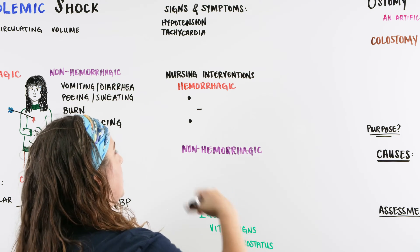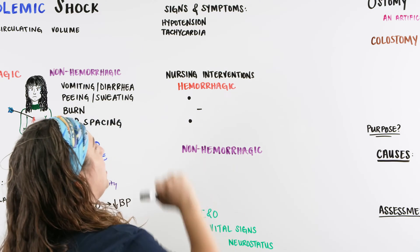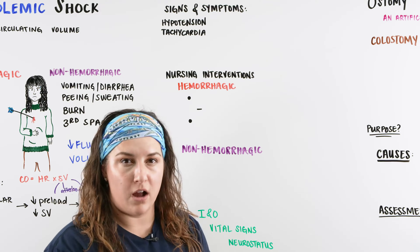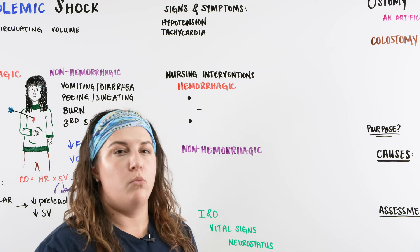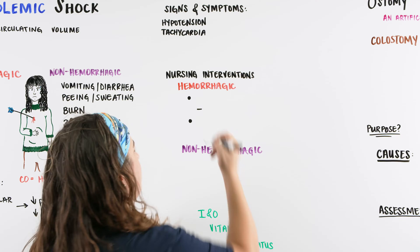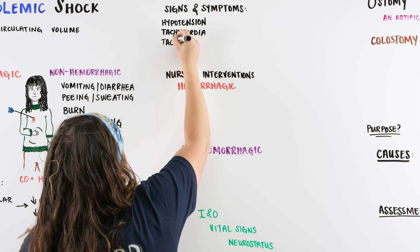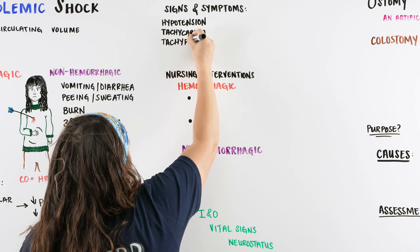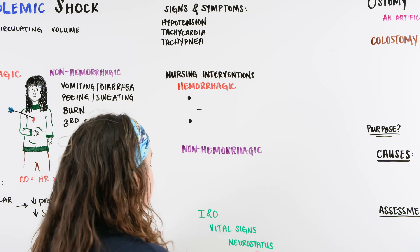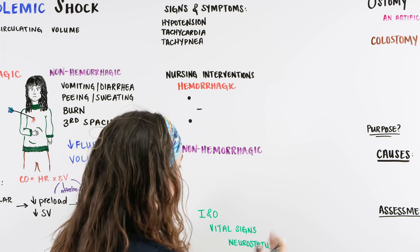We're going to have tachycardia because we're going to pick up that heart rate to try to increase the cardiac output. But what else is going to occur? If we're having an issue delivering oxygen and our body notices that, it's going to say breathe more. So now we're going to have tachypnea — patients are going to have an increase in their respiratory rate, breathing that's going a lot faster.